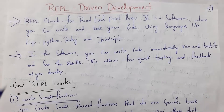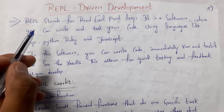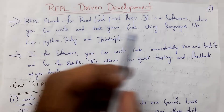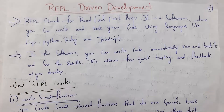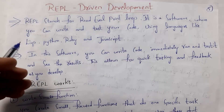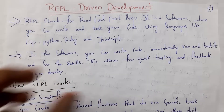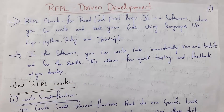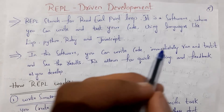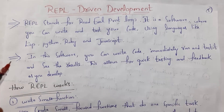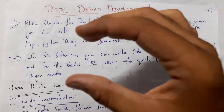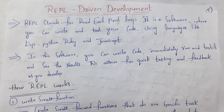Next I will explain what is REPL driven development. REPL stands for Read, Eval, Print Loop. REPL is software that allows you to write and test your code using programming languages like Lisp, Python, Ruby, and JavaScript. In this software you can write code, immediately run it, and test it. You can execute testing code immediately and see results, so this software allows quick testing and feedback.